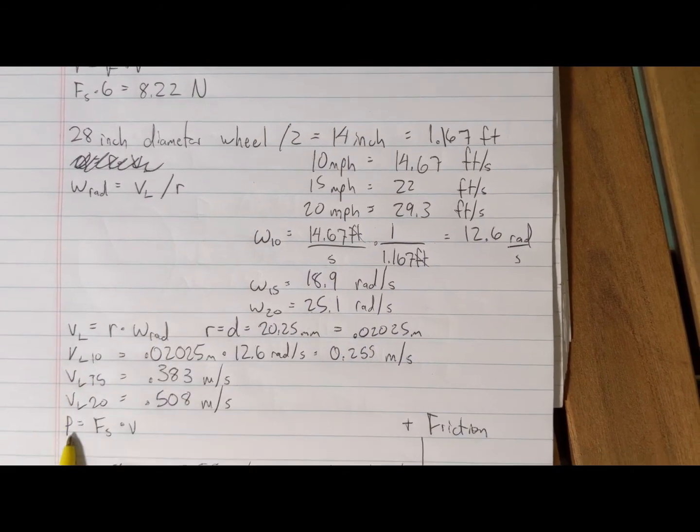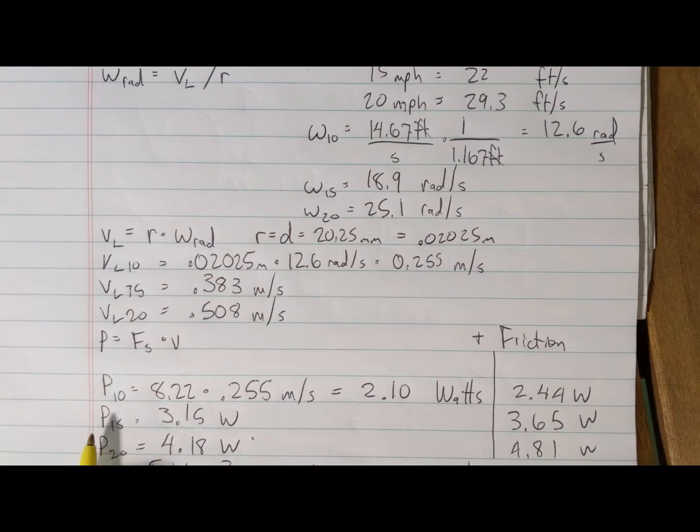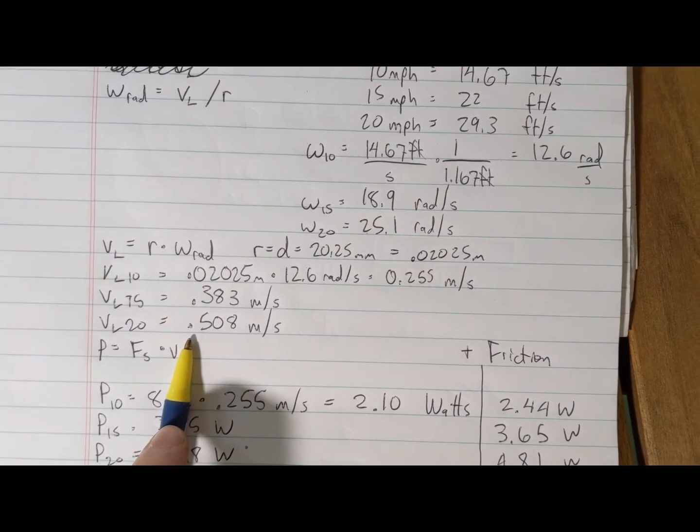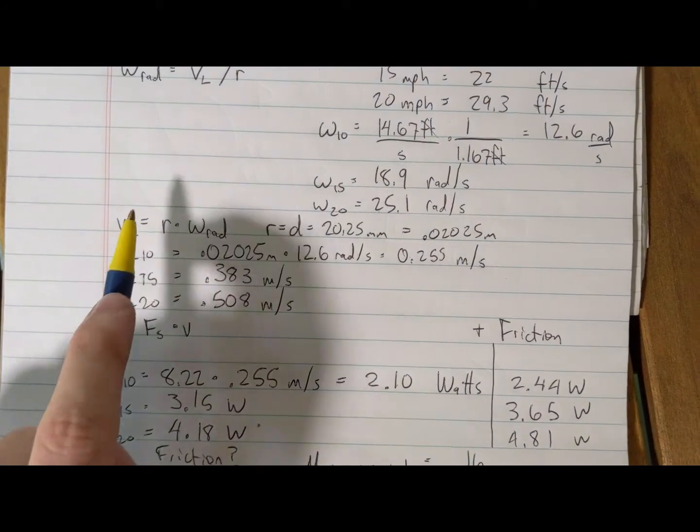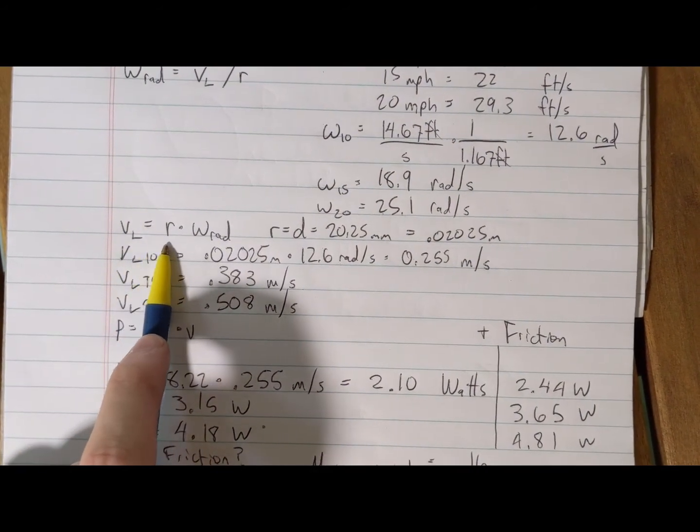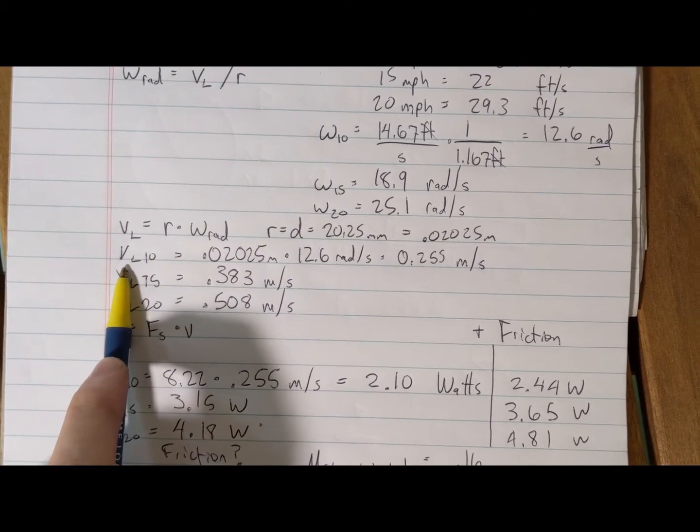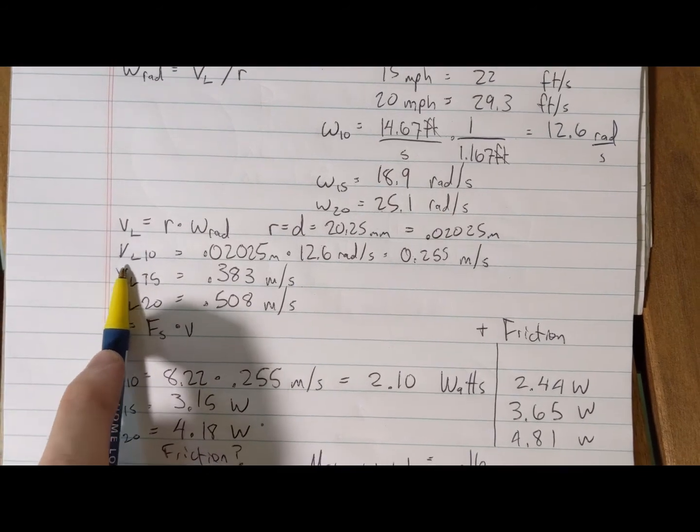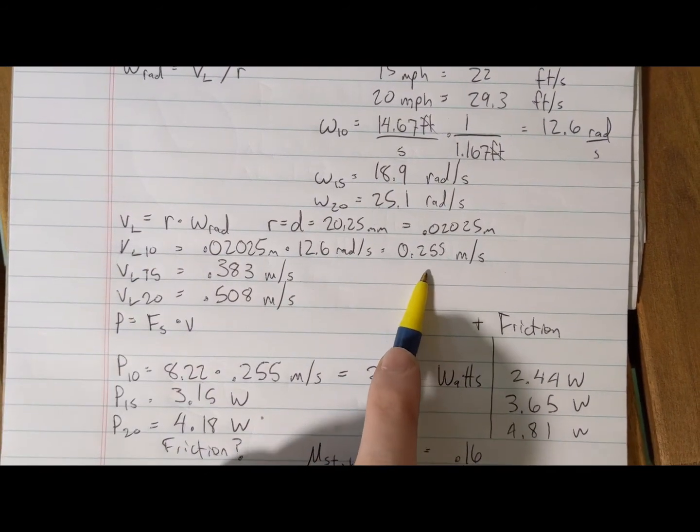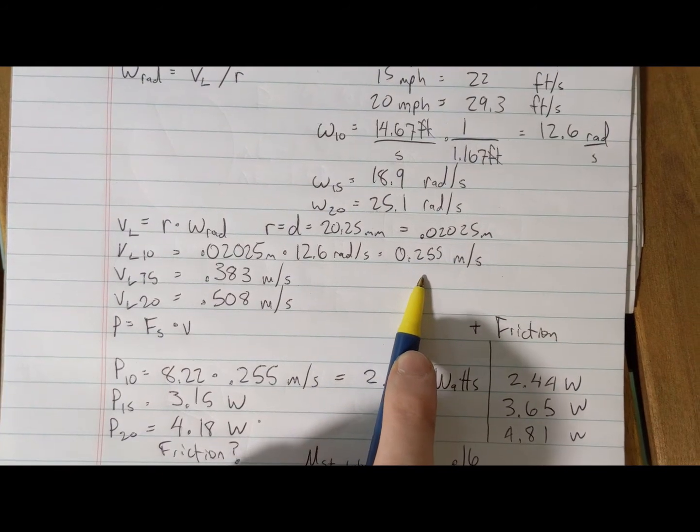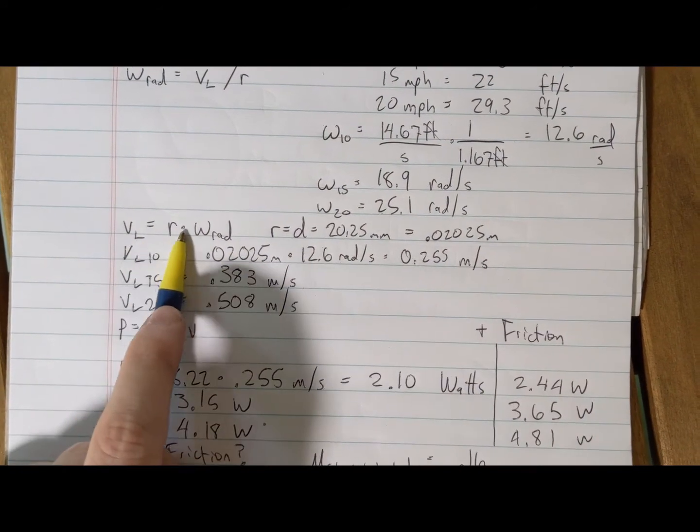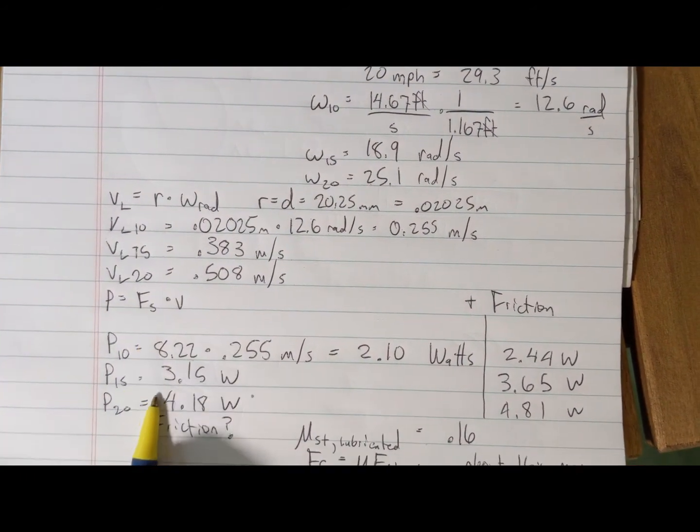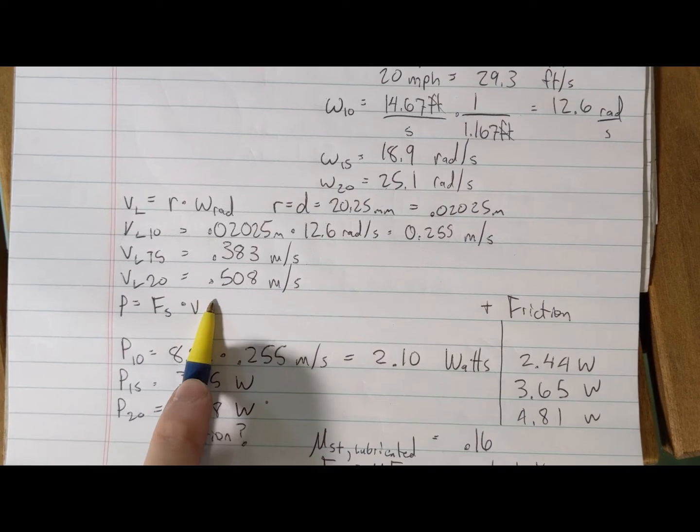Next we're going to measure the linear velocity at the steel drive ring in the hub. We're going to use that same formula just arranged differently. We're going to see that the linear velocity at 10 miles an hour at the hub is 0.255 meters per second. We're able to do this because radians per second is a non-dimensioned unit. So I've converted that for all of our velocities.